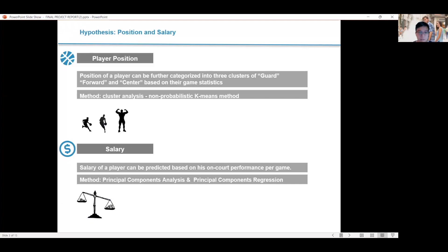So for these two parts, we have a respective hypothesis. For position, we are hypothesizing that the position of a player can be further categorized into three clusters of guards, forward, and center, based on their game statistics. And we are using the cluster analysis, namely the non-probabilistic k-means methods, in order to solve this problem. For the salary, we are assuming that the salary of a player can be predicted based on his on-court performances per game. And we are using principal component analysis to, first of all, reduce the enormous dimension of our dataset, and then use all these PCs to fit a regression against the dependent variable of salary to see that whether they have a correlation.